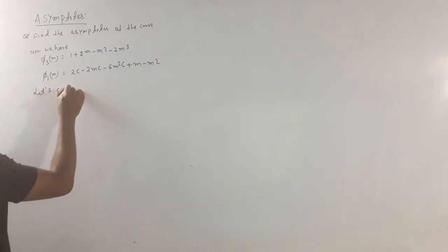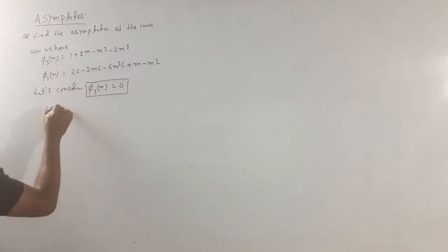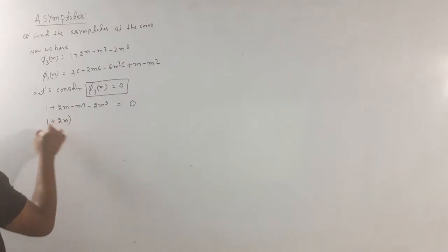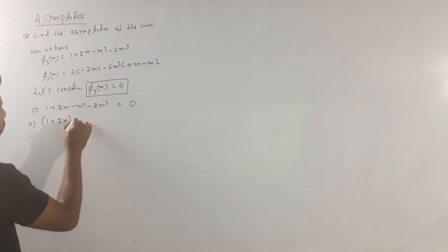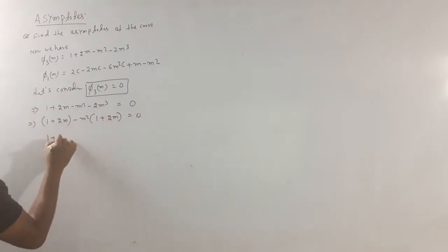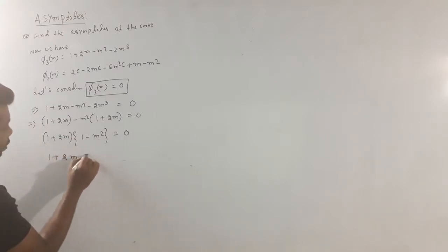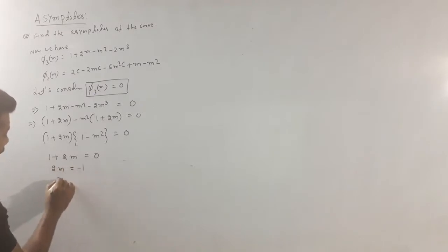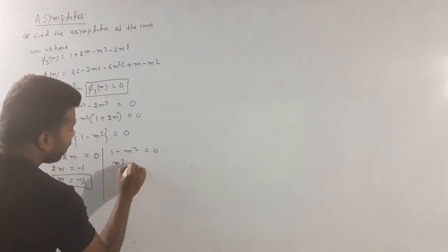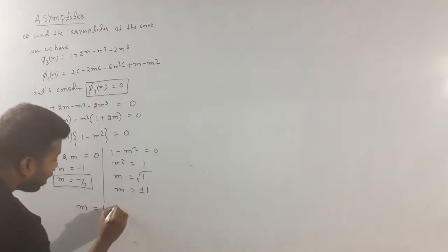Let phi_3(m) equal to 0. So 1 plus 2m minus m² minus 2m³ equals 0. Factorize: 1 plus 2m equals 0, which gives 2m equals minus 1, so m equals minus 1 by 2. Also factorize 1 minus m² equals 0, giving m² equals 1, so m equals plus or minus 1. Finally, m has three values: 1, minus 1, and minus 1 by 2.